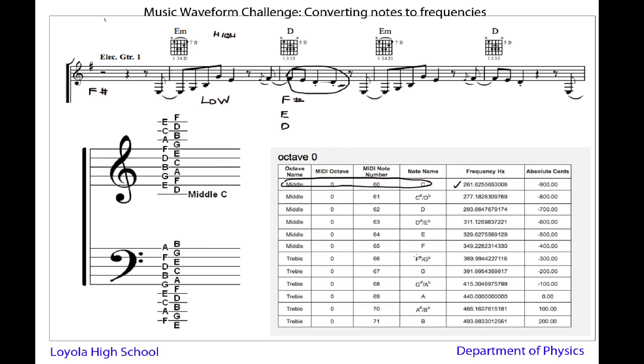So an F sharp looks like it's down over here. 369.99. So I'll just say 370 hertz. And then an E is right here. It's 329. And a D is right there. 293.